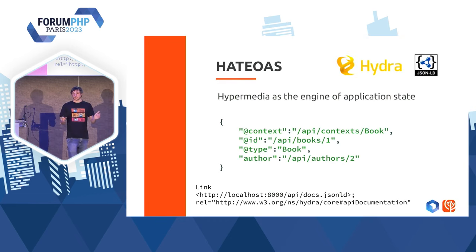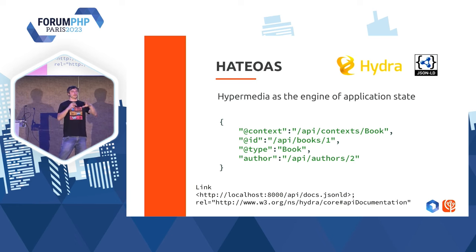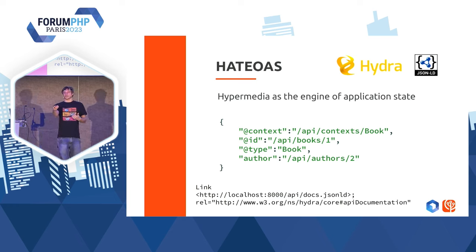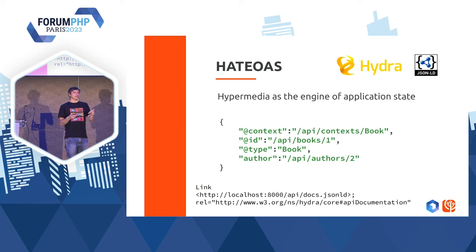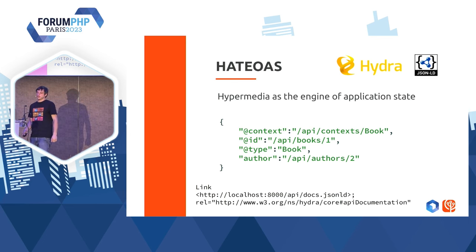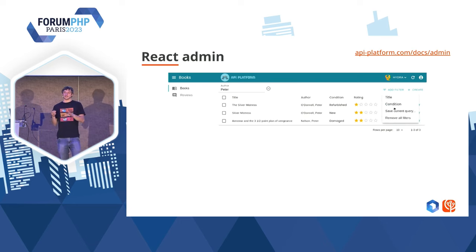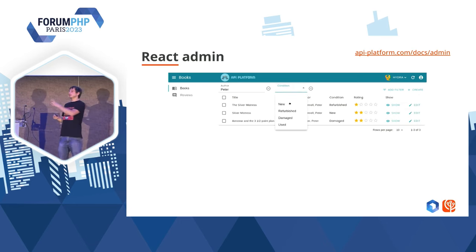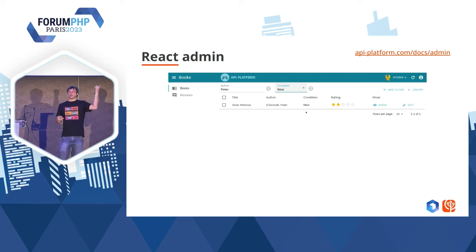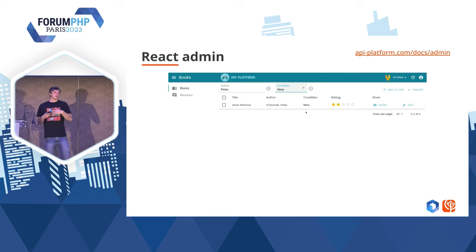Quand on parle d'API hypermédia, on peut se le représenter comme ayant beaucoup de liens qui se font entre les données — des liens en interne sur notre API, mais aussi des liens vers l'extérieur. Vous voyez un exemple de JSON-LD où l'auteur est un lien vers une ressource auteur. Tout en bas, j'ai mis aussi un en-tête Link qui va beaucoup nous servir dans API Platform : il permet de dire que cette ressource est documentée sur cet endpoint de mon API. Grâce à ce lien, avec API Platform, on a des outils comme ça — un outil d'administration qui va lire votre documentation et automatiquement générer cette interface. Vous allez pouvoir avoir des filtres, des tris, des formulaires dynamiques, etc. Tout ça est basé sur React Admin et est complètement extensible.